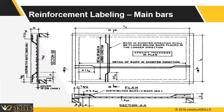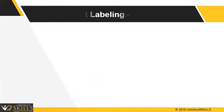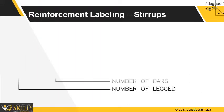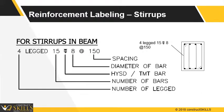A typical reinforcement labeling. Here, reinforcement labeling for stirrups is shown: 4-legged, 15 Tor 8 at 150, where 4 stands for number of legs, 15 stands for number of bars, Tor stands for type of steel as HYSD or TMT, 8 stands for diameter of bar, and 150 stands for spacing.